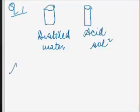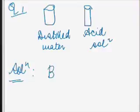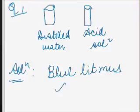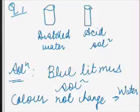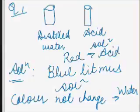How will you find which of the test tube contains water without tasting the contents of the test tubes? The solution is: a drop of blue litmus solution is added to each test tube. In one test tube, the color of the solution changes to red, and in the other test tube, the color of the solution does not turn red. The solution in the test tube which does not turn red contains water, and the solution which turns red contains an acid solution.